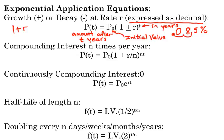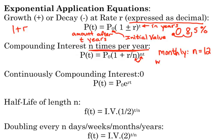Notice the second formula — the only difference is we have this n. N is the number of times per year. So if it says monthly, what is n? N is 12. If it compounds monthly, there are 12 months in a year, so that's going to happen 12 times every year. If it says weekly, how many weeks are in a year?